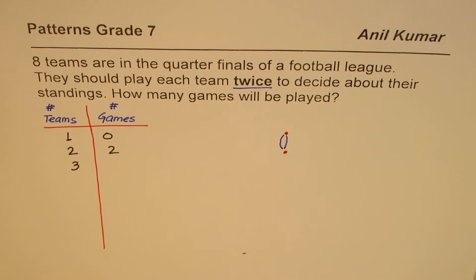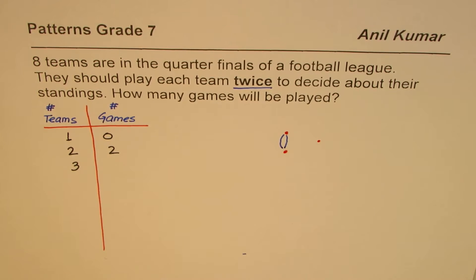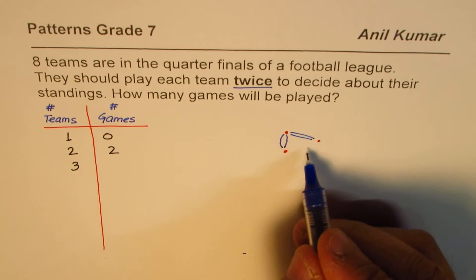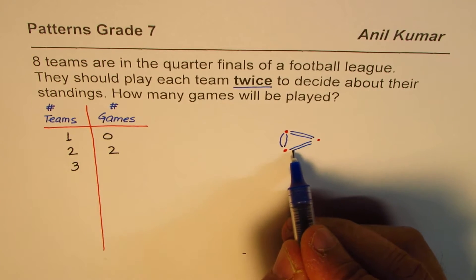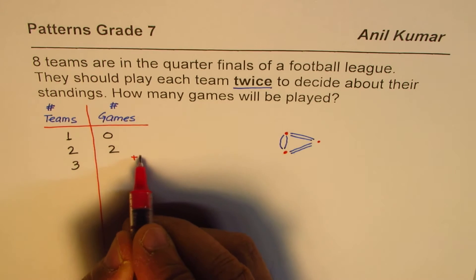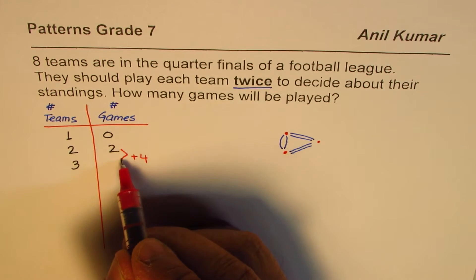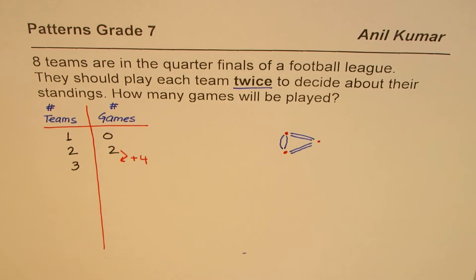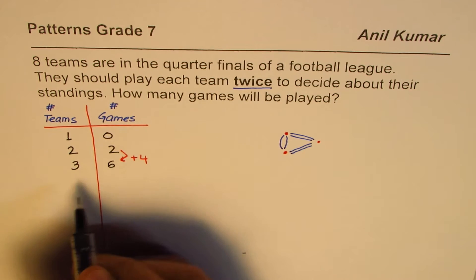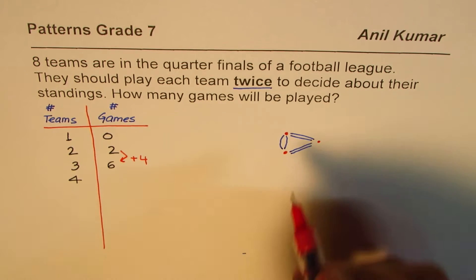How about another team joining them? If a third team joins, it will play two games with the first team and two games with the second team — that means four more games. So we add four to the existing two games to get the new number. Four plus two is six.